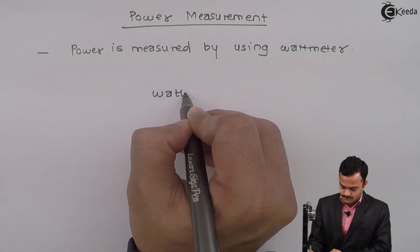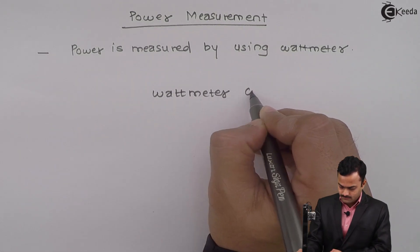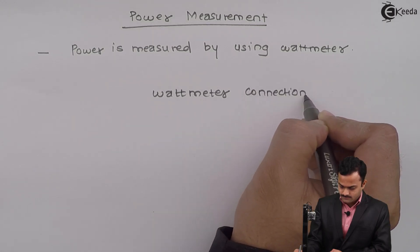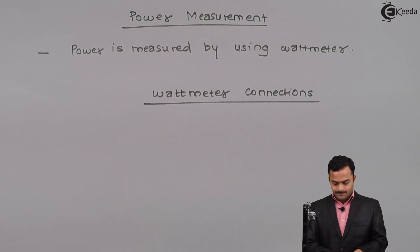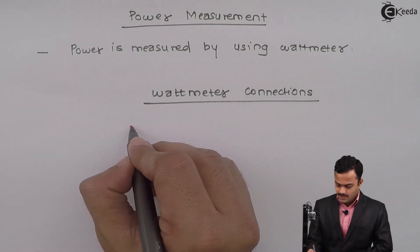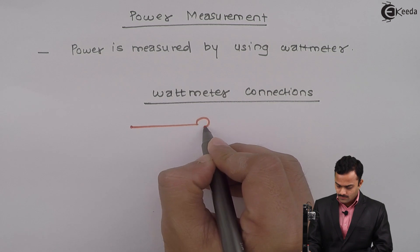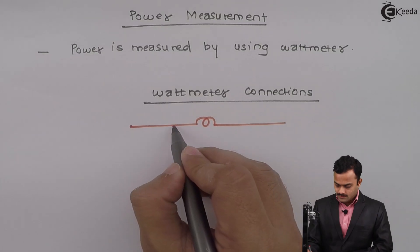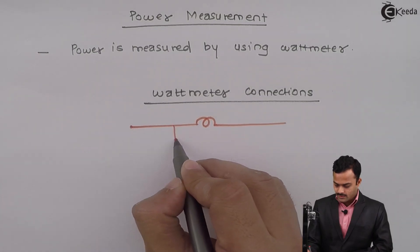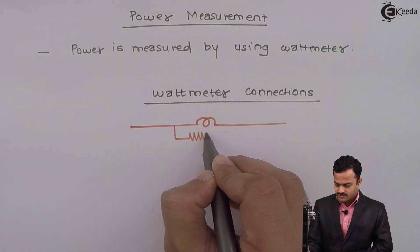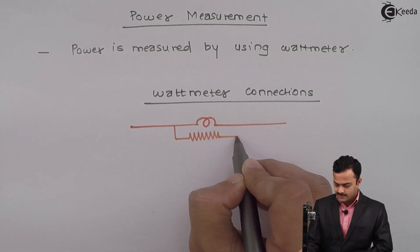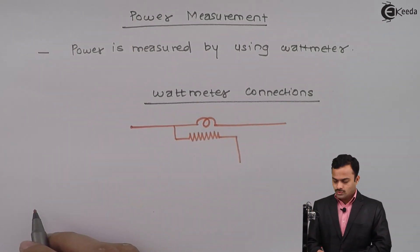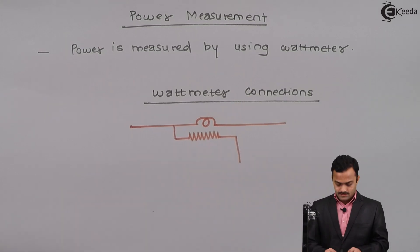The wattmeter has a current coil to sense current and a voltage coil or pressure coil to sense voltage. The wattmeter has a box that looks like this.